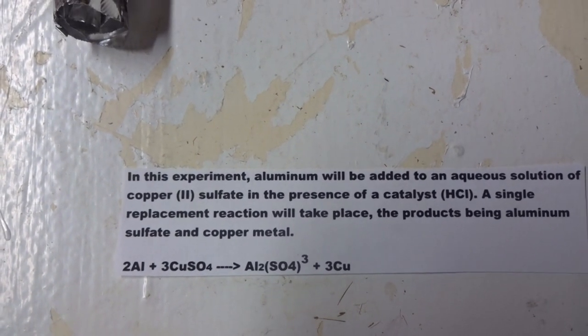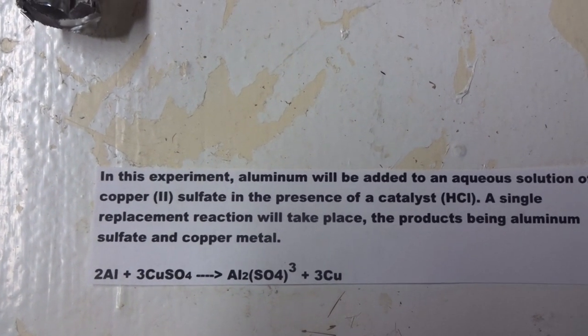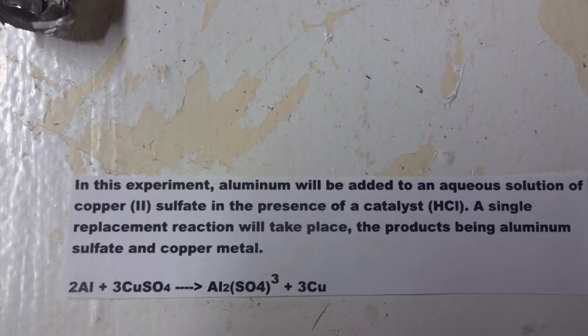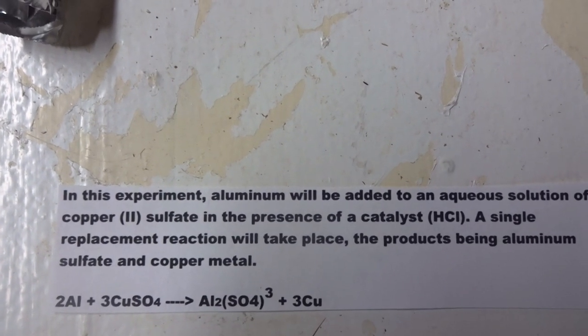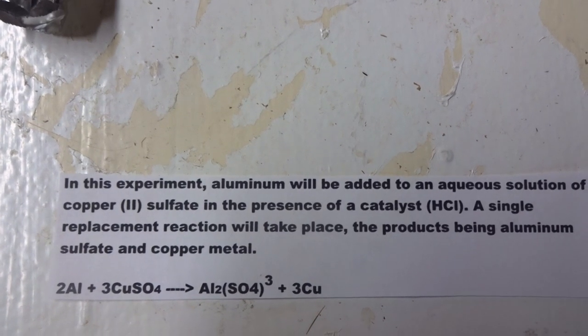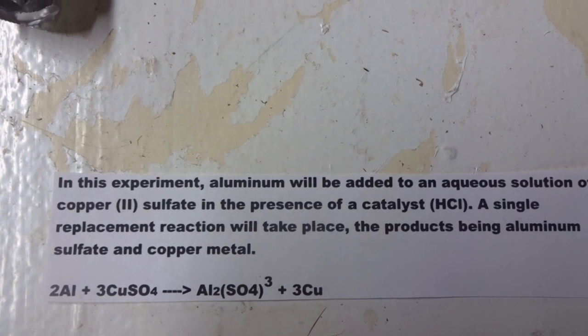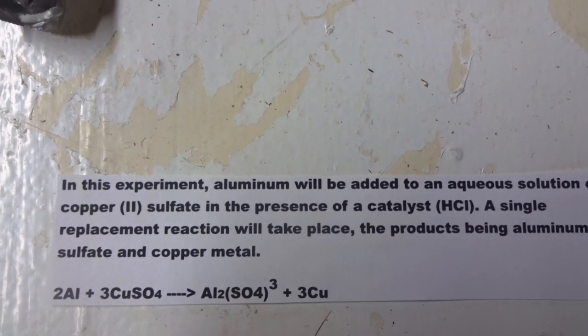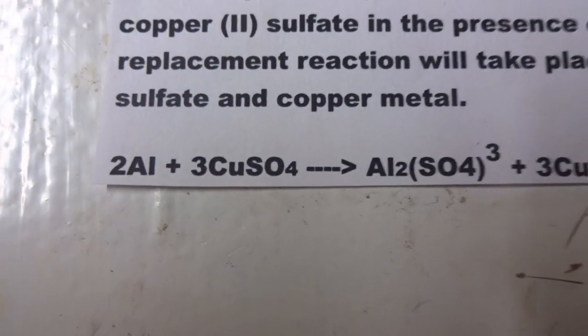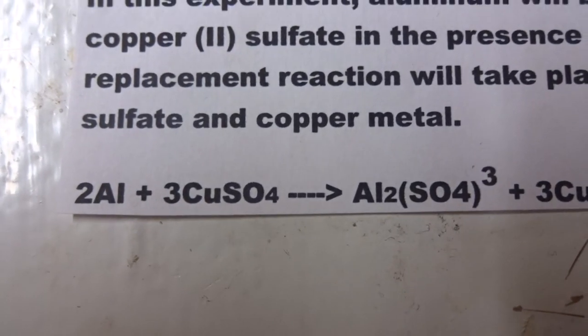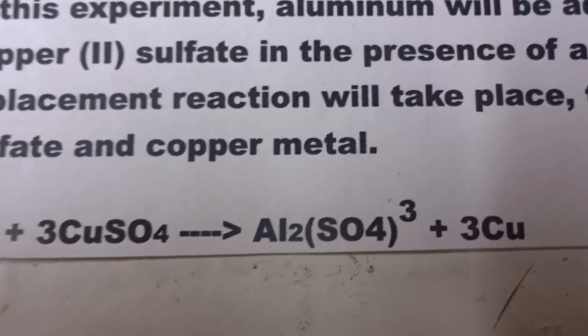In this experiment, aluminum will be added to aqueous solution of copper-2 sulfate in the presence of a catalyst, HCl. A single replacement reaction will take place, the products being aluminum sulfate and copper metal. And here we see the reaction: 2Al + 3CuSO4 yields Al2(SO4)3 + 3Cu.